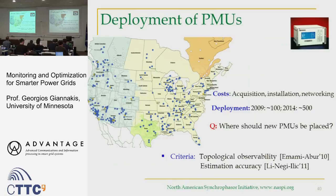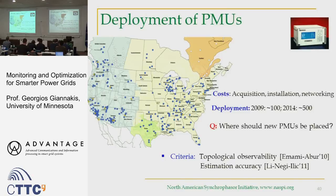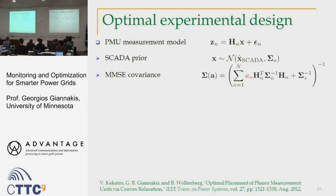The major costs in deploying PMUs — and about 100 are being deployed per year in the US — include acquisition and network installation. A major question is: if you have a choice, where do you put the PMU, since you cannot put them everywhere, at least in the near future? The criteria proposed are either topological observability or estimation accuracy, which are somewhat related.